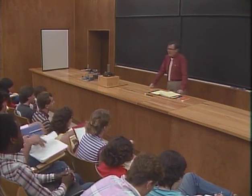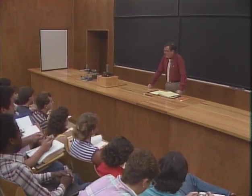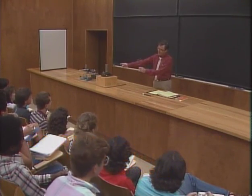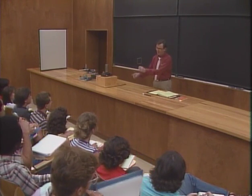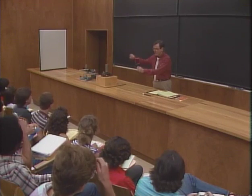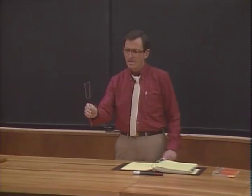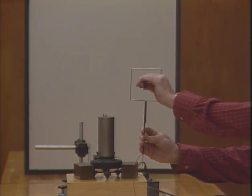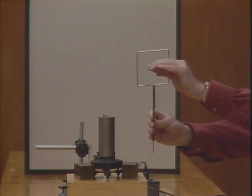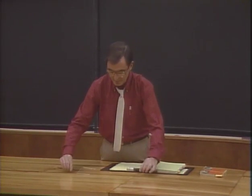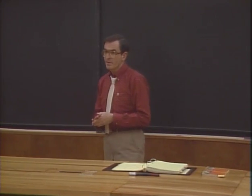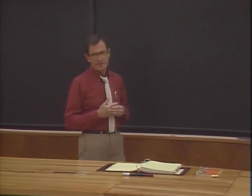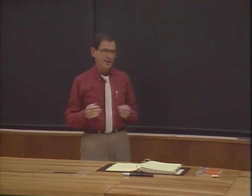Let me start today by showing you a little demonstration you've already seen before. I have here just a loop of wire connected to a galvanometer, which will tell us whether an electric current is running around in this loop. The laser beam spot on the screen will move whenever an electric current runs in this loop. By now we have mastered all of the formidable machinery of electricity and magnetism, so let's describe how that experiment works.